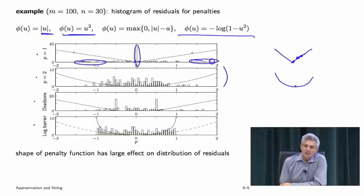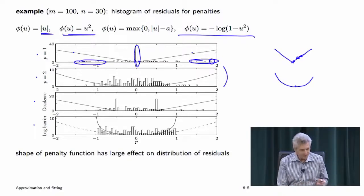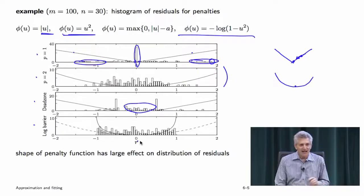Here's dead zone linear — and you see something very interesting. If your residual is between plus and minus 1.5, we don't care at all. A residual of 1.5 is no better and no worse than zero. Dead zone linear says there's an incentive to reduce a residual, but the incentive entirely disappears once a residual hits the threshold. And here's the log barrier — sure enough, as required, all residuals have been crushed down below the limit.